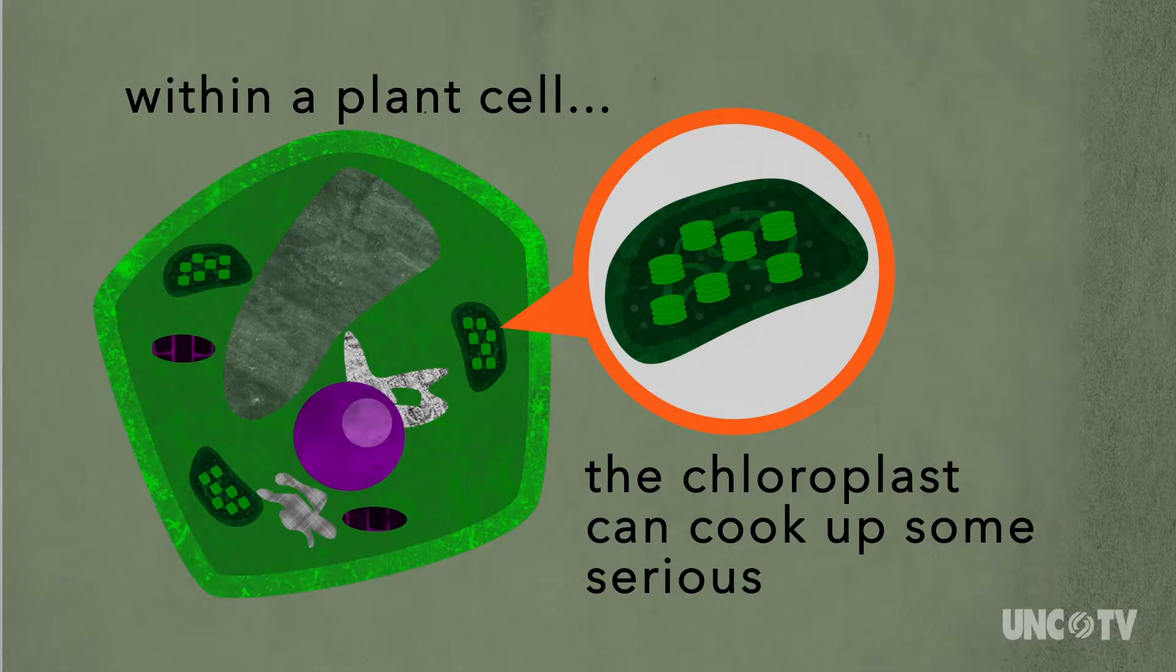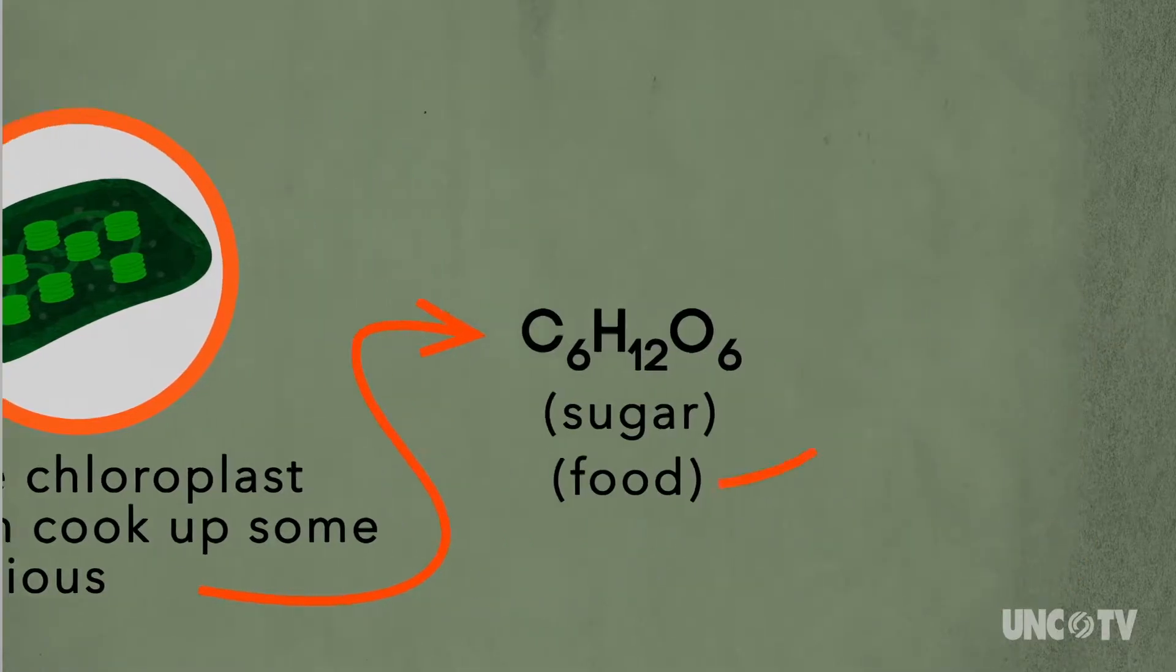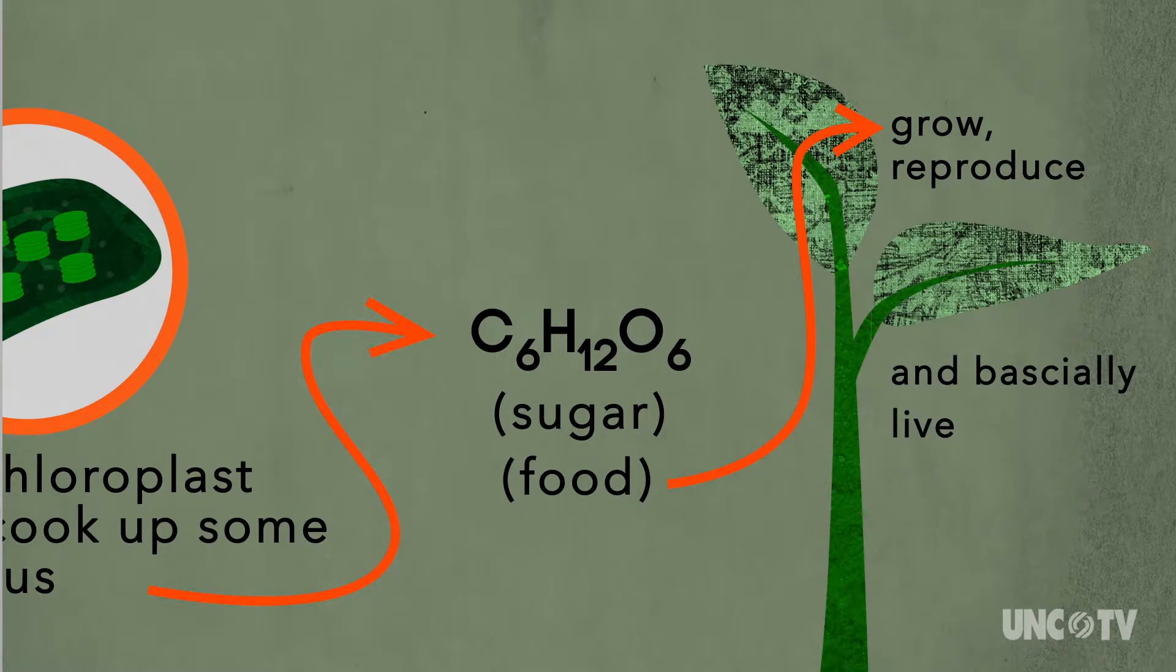this little kitchen known as the chloroplast makes the food. It uses this food to grow and reproduce and basically live, and what it doesn't use up, it stores for later.